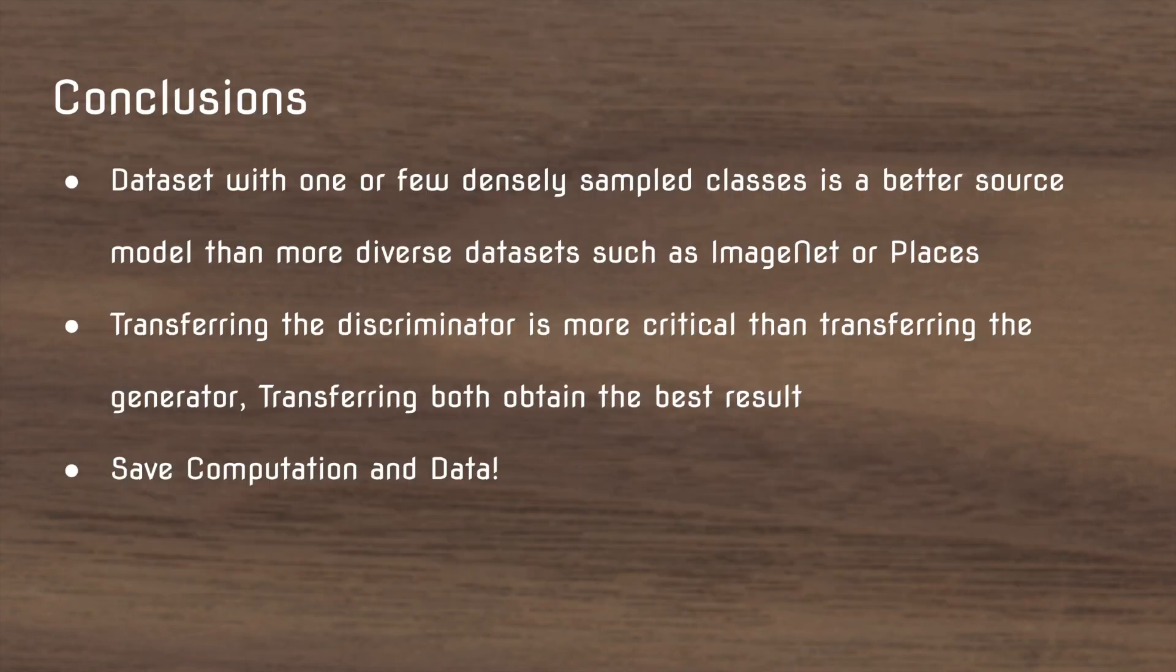So in conclusion, transfer learning in GANs is a really interesting idea. It can save computation and data. They find that transferring does work well and additionally they find that datasets with dense classes, so like maybe a dataset that has a bunch of dog breeds would perform better than a dataset in the source dataset that has a ton of different things.